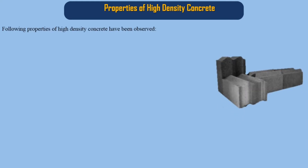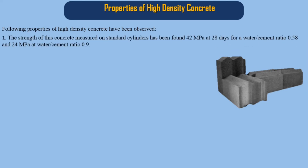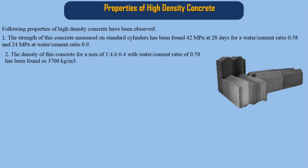The following properties of high density concrete have been observed. 1. The strength of this concrete, measured on standard cylinders, has been found to be 42 MPa at 28 days for a water-to-cement ratio of 0.58, and 24 MPa at a water-to-cement ratio of 0.9.